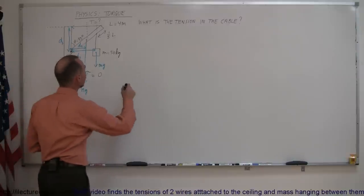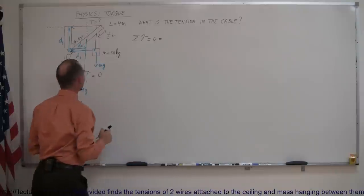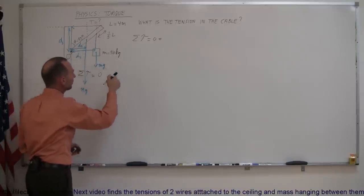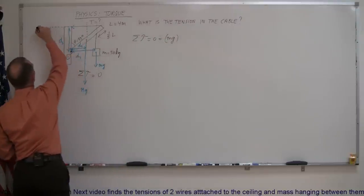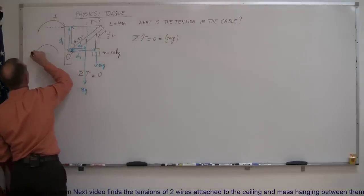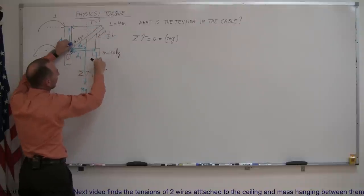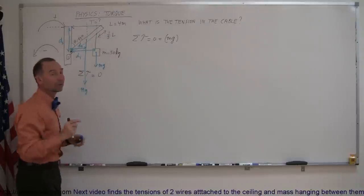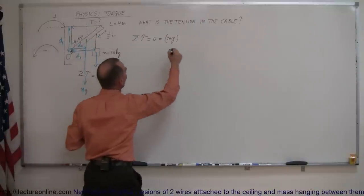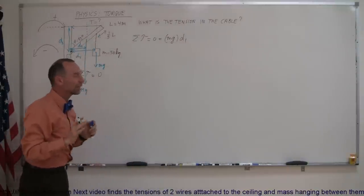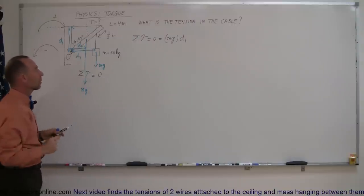The sum of all the torques adds up to zero, so let's find all the torques. Torque number one is caused by the little mg. I'm going to define clockwise torque as positive and counterclockwise torque as negative. If this were the only force acting on the beam, the beam would be pulled in a clockwise direction, so that's a positive torque, and the distance from that line of action to the pivot point is distance one. I'll do it one step at a time.